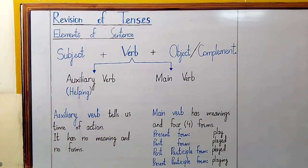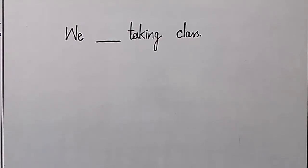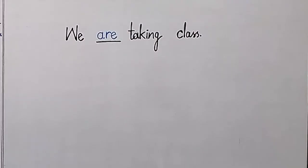Verb has two main branches: auxiliary verb and main verb. Auxiliary verb is also called helping verb; it comes before the main verb and helps us to know the time of action. For example, I have written a sentence on the board — you cannot tell me the time of action, whether it is present, past, or future tense, unless I use a specific auxiliary verb. Now I have used an auxiliary verb in the blank: the sentence is 'We are taking class.'